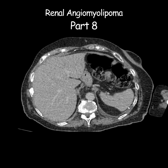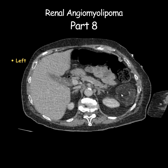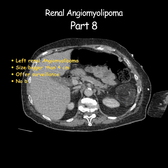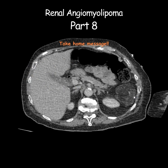To put it all together, in the conclusion of the report, I would say that there is a large left renal angiomyolipoma. This is a benign tumor, but given its size — bigger than 4 cm — I would recommend surveillance. We didn't have any evidence of active bleeding or malignant transformation at present. The take-home message from this video: always carefully look at the fat, because fat density differences can reveal major findings on imaging.